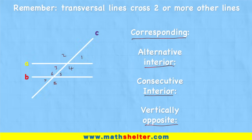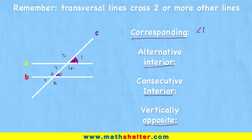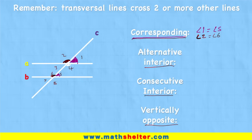Let me show you what I mean. Angle one here — color it purple — is going to be exactly the same as angle five, because they are both being cut by the transversal line and lines A and B are parallel. So angle one is equal to angle five, and they are corresponding angles. The other corresponding angles: angle two equals angle six, angle four equals angle eight, and angle three equals angle seven. And they are all the corresponding angles.